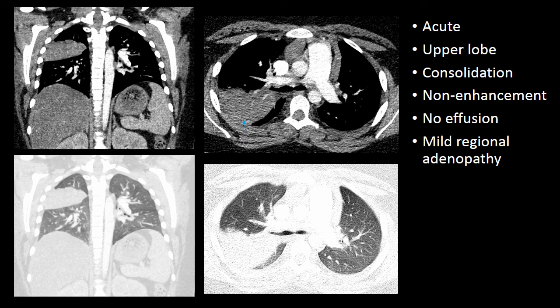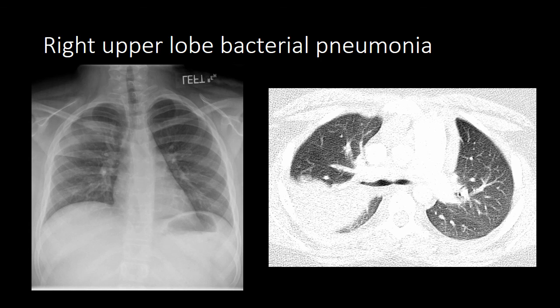Remember that airspace filling can occur from many different etiologies, but commonly fluid, pus, or blood. The radiographic appearance of airspace filling by different types of fluid, pus, or blood can be very difficult to distinguish, and you often have to rely on your clinical information. Again, this was a right upper lobe bacterial pneumonia.